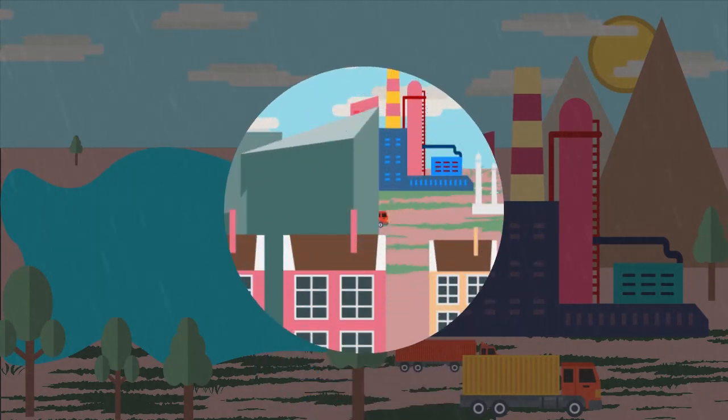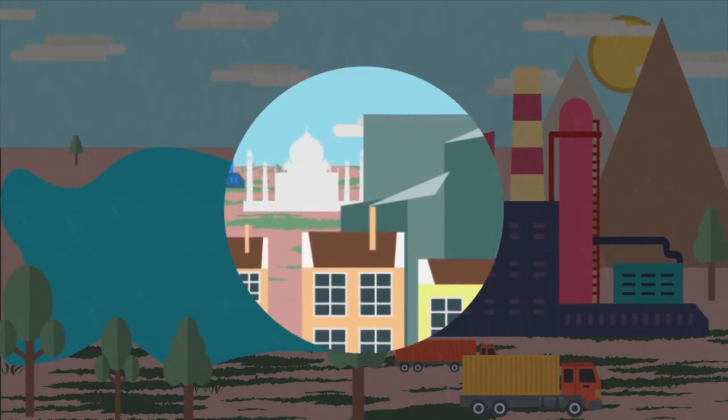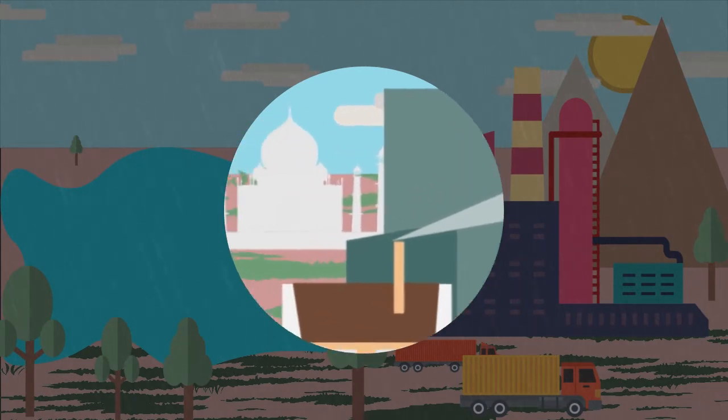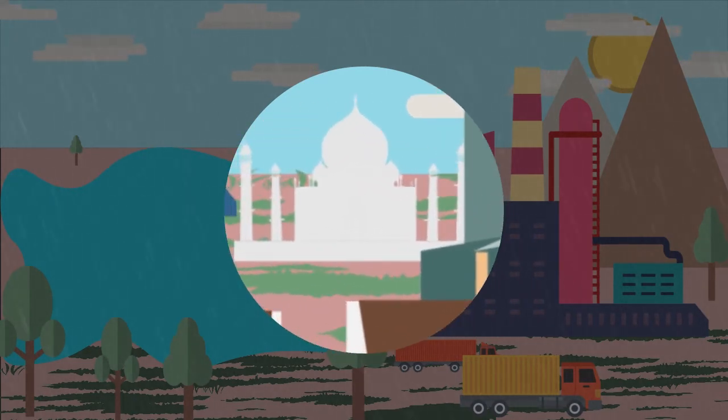Acid rain also affects old buildings and monuments. The Taj Mahal is one of the victims of acid rain, as it is surrounded by large industries. Taj Mahal's marble has lost its luster considerably because of this issue.